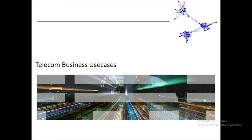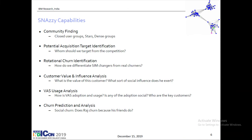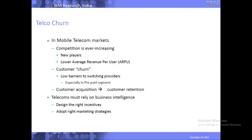Coming to our context: we got data from telecom operators and our goal was to see if we can solve any real business problem using this data. One of the things really important to a telecom operator is whether they are losing customers. Airtel is worried if customers are going to Jio — this is called churn, meaning one person is leaving to another network provider.